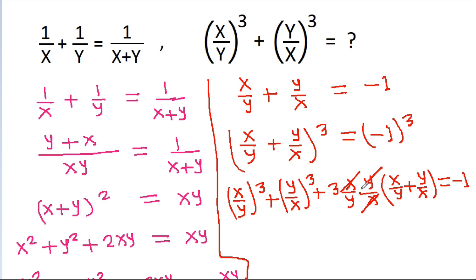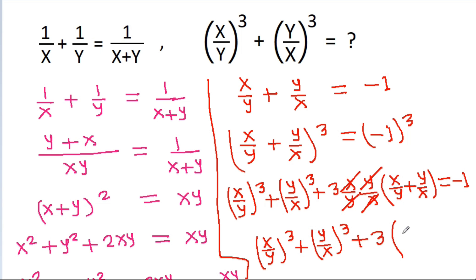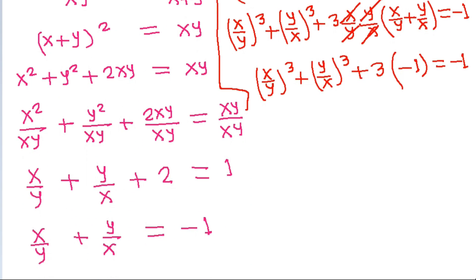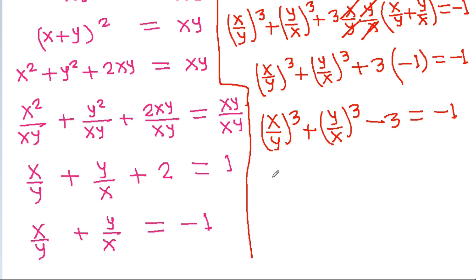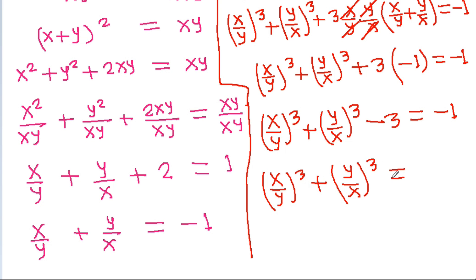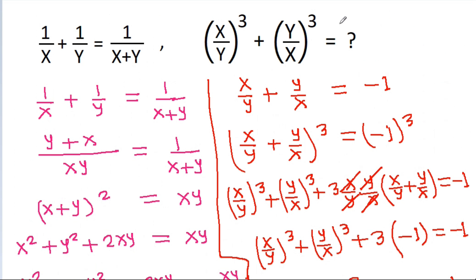The x and y cancel, and we get x by y cubed minus y by x cubed minus 3 times x by y minus y by x equal to minus 1. So x by y cubed plus y by x cubed, and 3 times minus 1 gives minus 3, equal to minus 1. Therefore x by y cubed plus y by x cubed equals minus 1 plus 3, which equals 2.